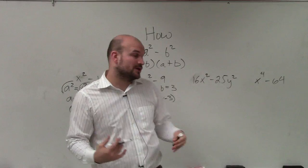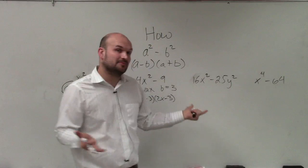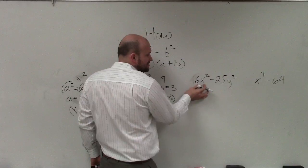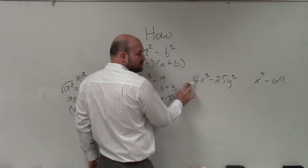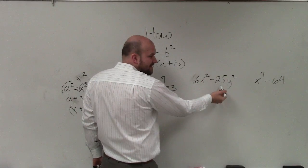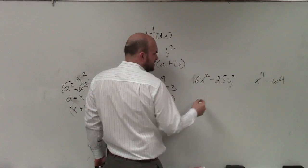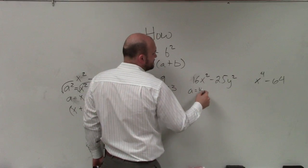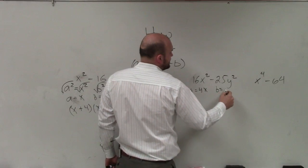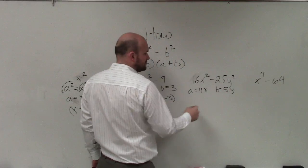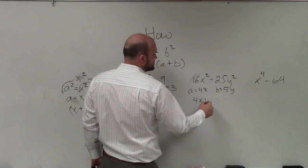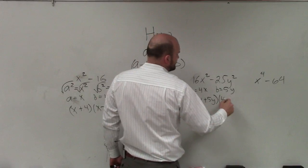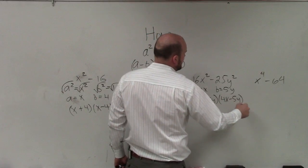Over here, we definitely have two variables, but it's going to be the same thing. You're going to want to take the square root of this and determine is this a square term? Well, yes: 16 is a square number, x is a square number, 25 is a square number, and y squared is a square number. Therefore, I can say a is 4x, and b equals 5y. Now, using the difference in two squares, 4x plus 5y times 4x minus 5y.